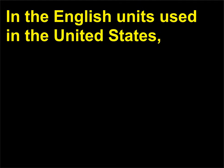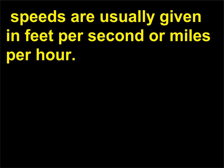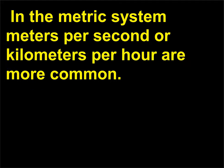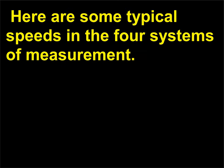In the English units used in the United States, speeds are usually given in feet per second or miles per hour. In the metric system, meters per second or kilometers per hour are more common. Here are some typical speeds in the four systems of measurement.